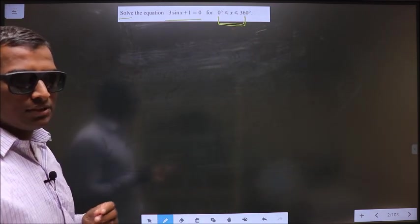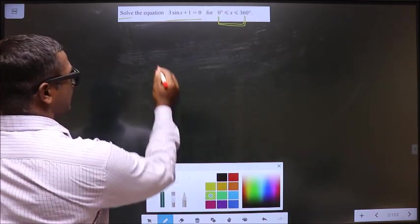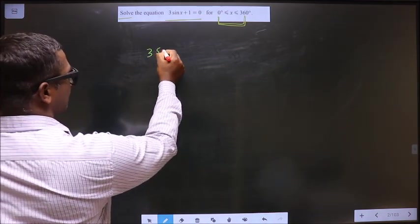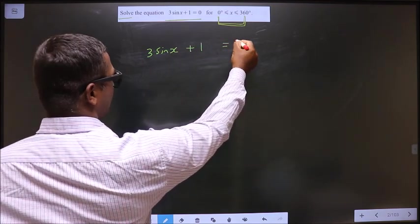Clear? Now how do we do that? First, the given equation is 3 sin x plus 1 equals 0.